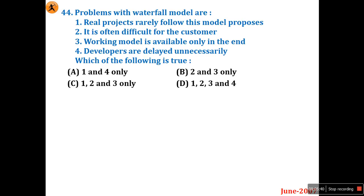Real projects rarely follow the waterfall model because it is a very simple linear sequential development model — there are no backward steps, which makes it difficult for real projects. It is difficult for the customer because it is linearly adjusted. A working model is available only at the end, and developers are delayed unnecessarily because all modules are independent.